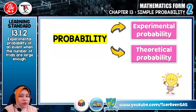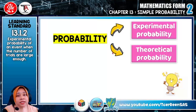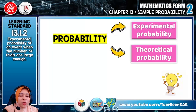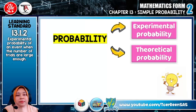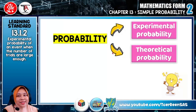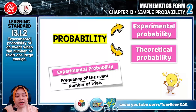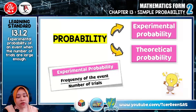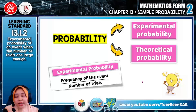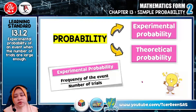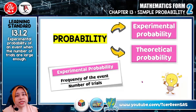Here is the summary of what we have learned in the video. There are two types of probability: experimental probability and theoretical probability, which we will learn in the next video. The formula to get experimental probability is frequency of event divided by number of trials. Please note that experimental probability of an event when the number of trials are large enough will approach the theoretical probability.